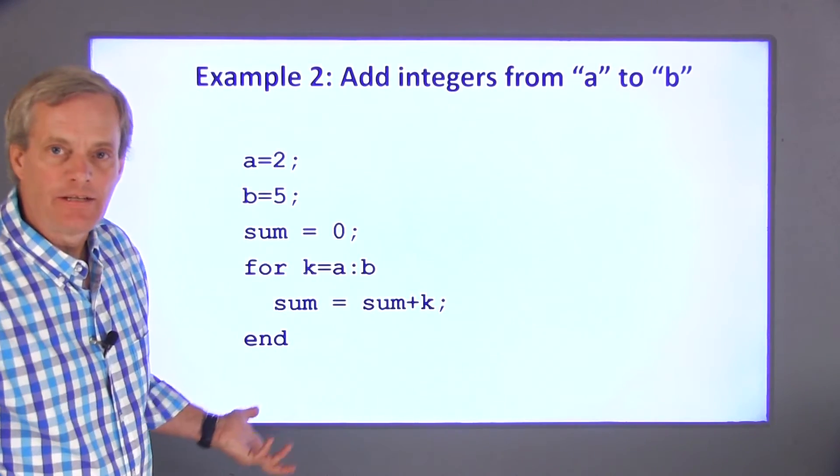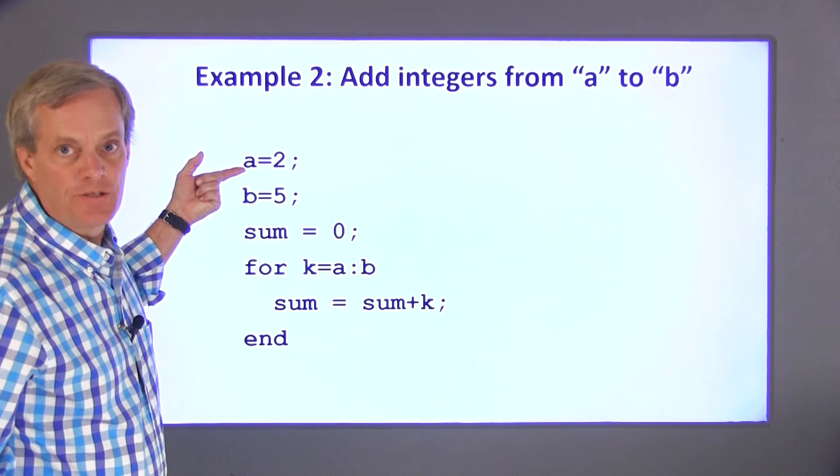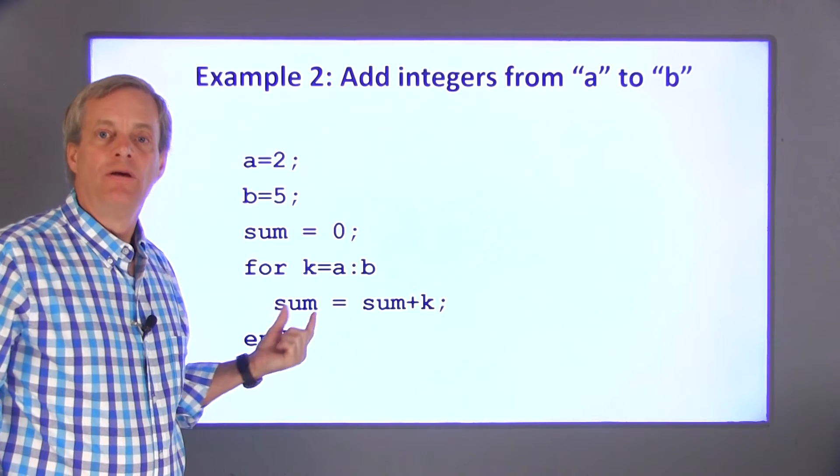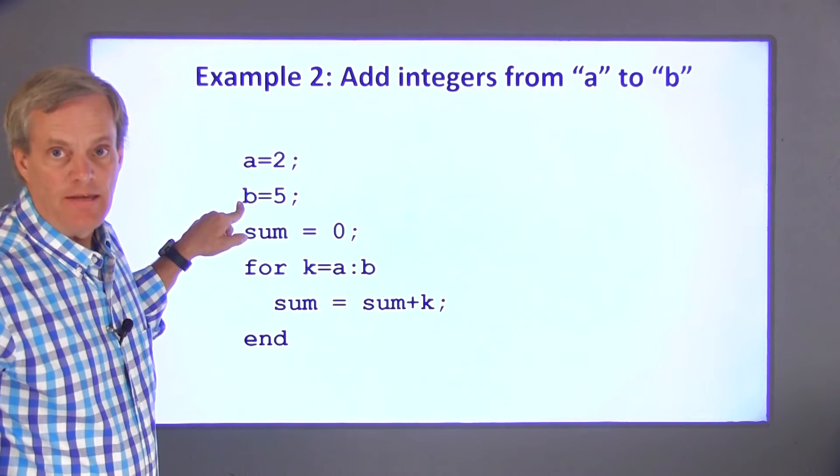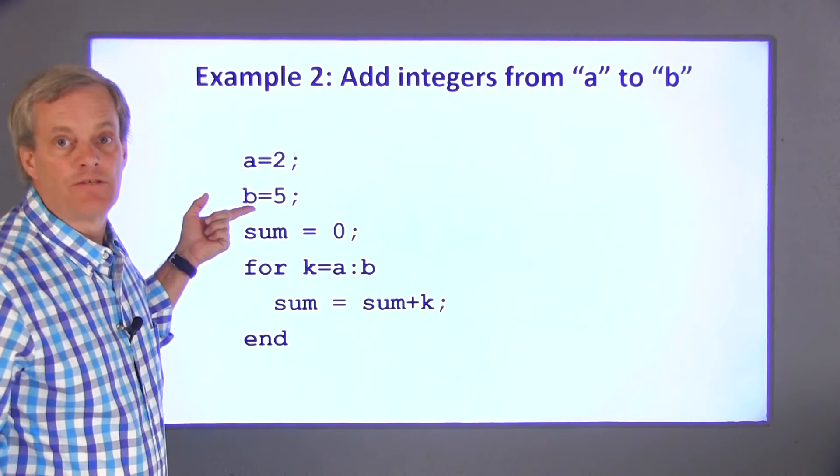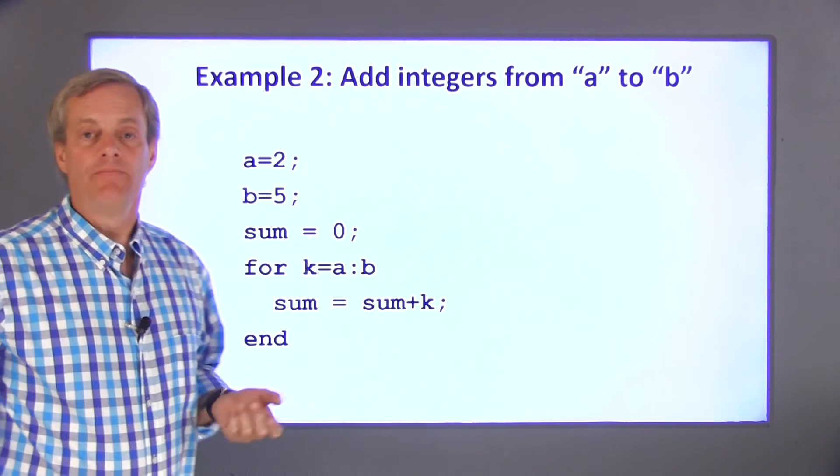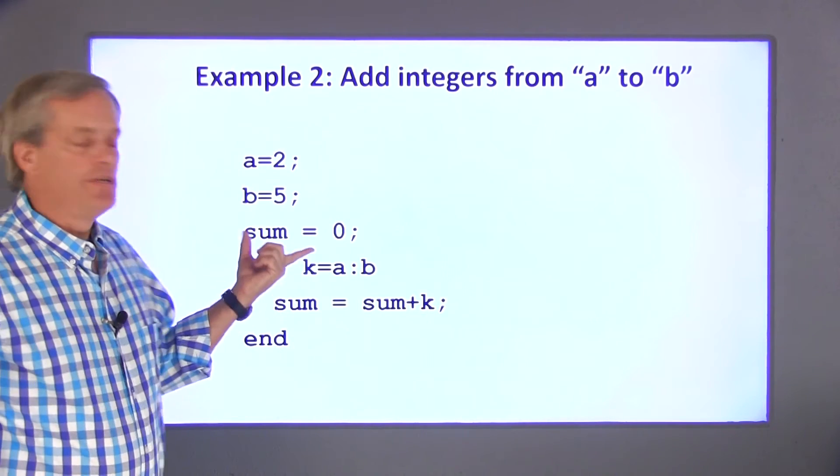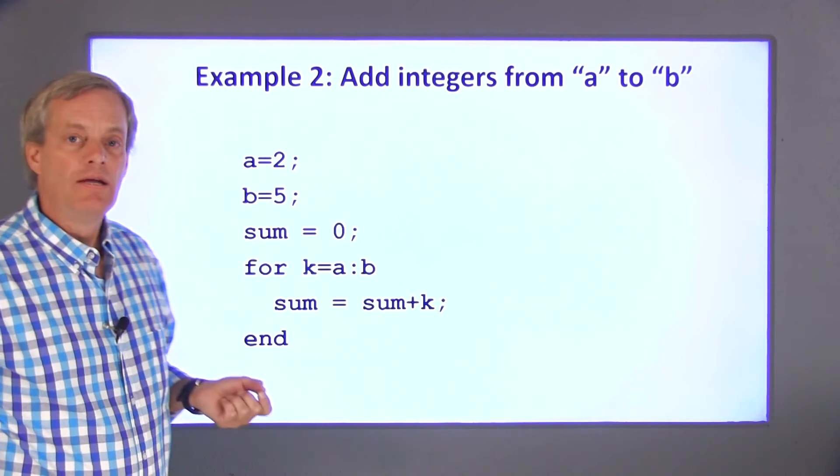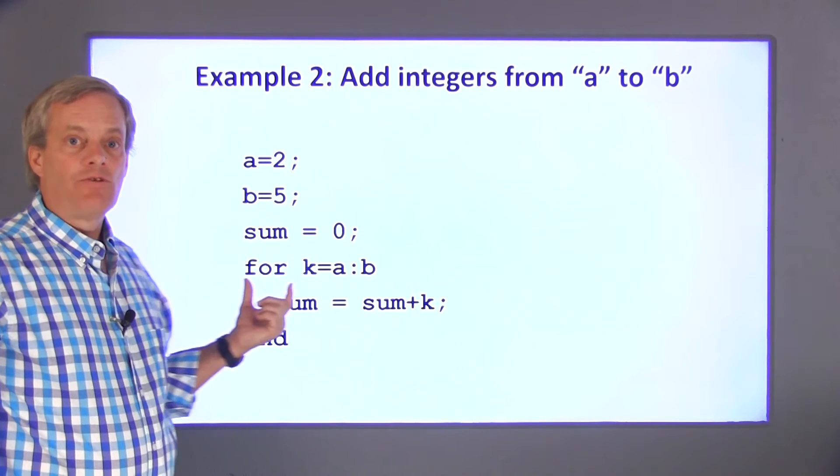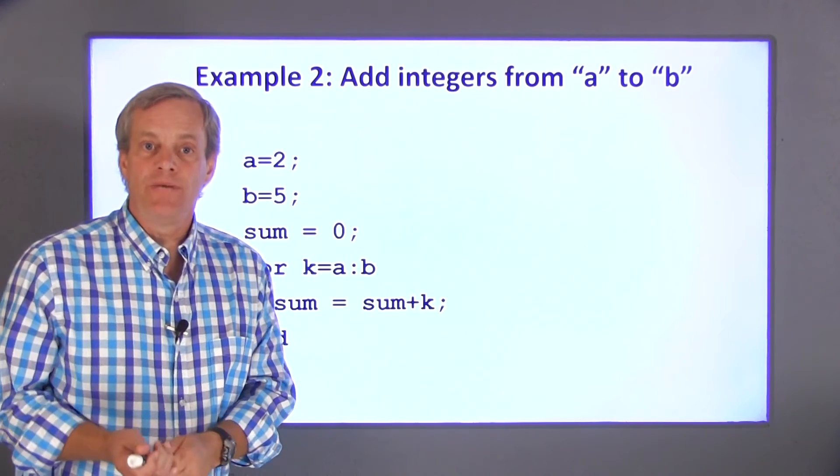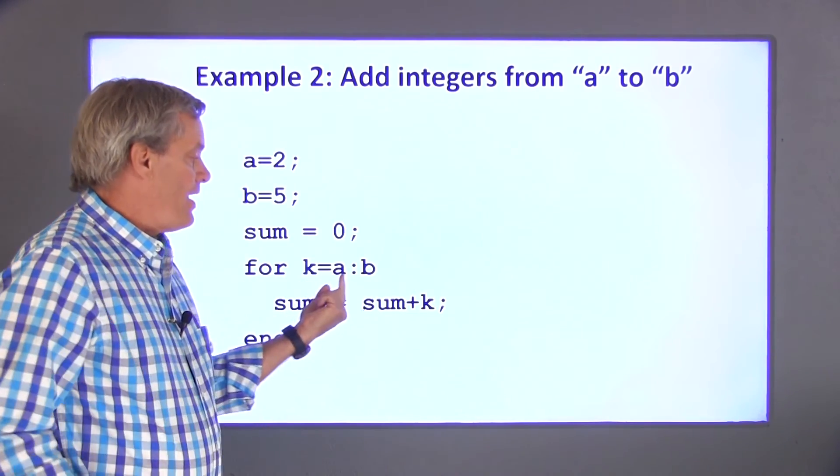In this second example, I've got a little code that adds up all the integers from the values of a to b and sets the result to a variable named sum. The code starts out by setting values for a and b. These values are arbitrary. The code should work for any integer values of a and b as long as a is less than b. Next, the code initializes a value for sum. I start out by setting sum equal to 0. Now we're ready to start the loop. I can create a vector of numbers starting at a, counting by ones, and ending at b with a colon b.